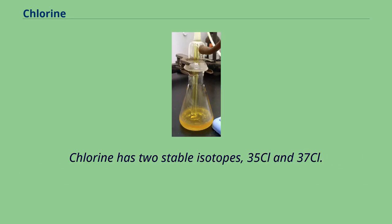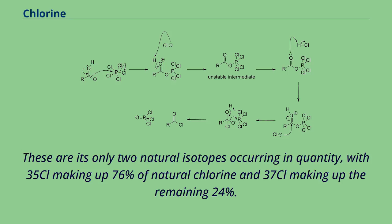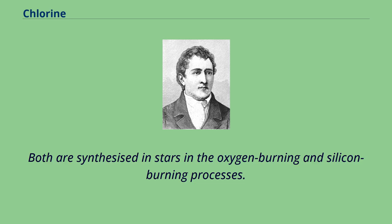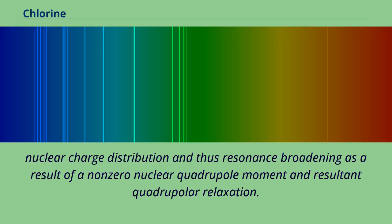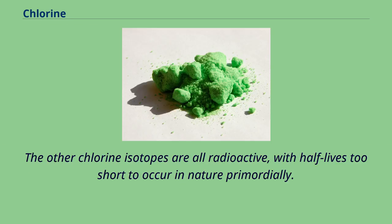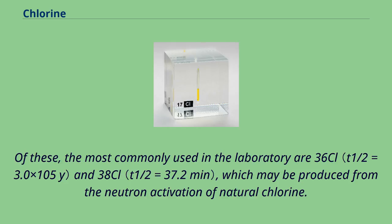Chlorine has two stable isotopes, ³⁵Cl and ³⁷Cl. These are its only two natural isotopes occurring in quantity, with ³⁵Cl making up 76% of natural chlorine and ³⁷Cl making up the remaining 24%. Both are synthesized in stars in the oxygen burning and silicon burning processes. Both have nuclear spin 3/2+ and thus may be used for nuclear magnetic resonance, although the spin magnitude being greater than half results in non-spherical nuclear charge distribution and resonance broadening as a result of a non-zero nuclear quadrupole moment. The other chlorine isotopes are all radioactive, with half-lives too short to occur in nature primordially. The most commonly used in the laboratory are ³⁶Cl and ³⁸Cl, which may be produced from the neutron activation of natural chlorine.